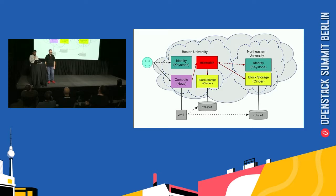This also works for images. And there is a spec for Neutron called Neutron-to-Neutron Interconnect, which allows VMs in different clouds to be connected with private networks together without the overhead of a VPN connection.